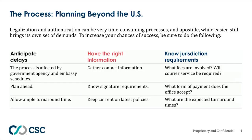Let's first talk about the process of planning beyond the United States. Legalizations and authentications can be extremely time-consuming, and while the apostille process is easier, it still is challenging and has its own set of demands. To be more successful, you have to anticipate delays, have the right information, and know jurisdiction requirements. Remember that you need to plan ahead and allow ample turnaround time, as this is affected by government, agency, and embassy schedules. Please note that some countries follow holidays that the United States doesn't — build that ample time into the process.